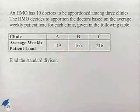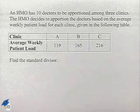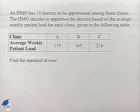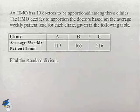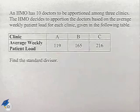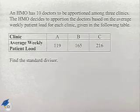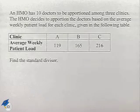Now let's look at finding the standard divisor. An HMO has 10 doctors to be apportioned among three clinics. The HMO decides to apportion the doctors based on the average weekly patient load for each clinic given in the following table. We have clinics A, B, and C and their average weekly patient load listed below. Find the standard divisor.